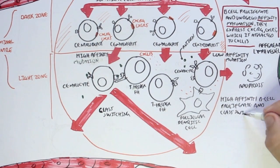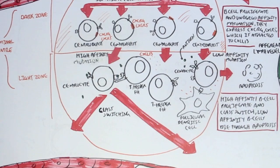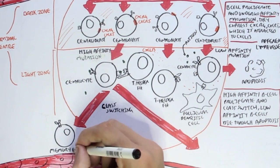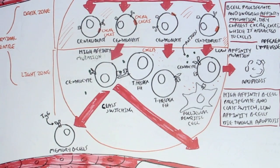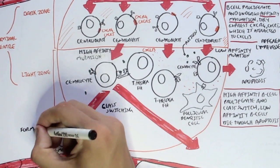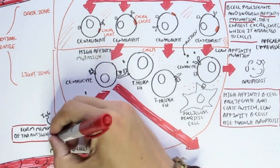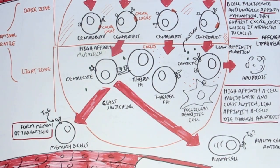The high affinity B cells proliferate and class switch, while the low affinity B cells die through apoptosis. This high affinity centricyte can differentiate and class switch to either memory B cells — which typically have immunoglobulin G antibody and form memories of that particular antigen — or alternatively differentiate and class switch to plasma cells, which have different types of immunoglobulin antibodies and whose role is to create antibodies.